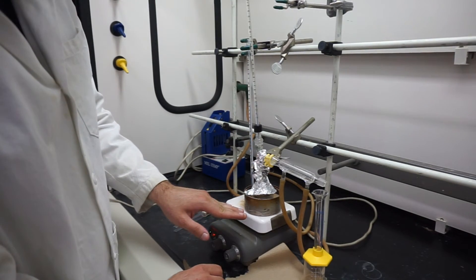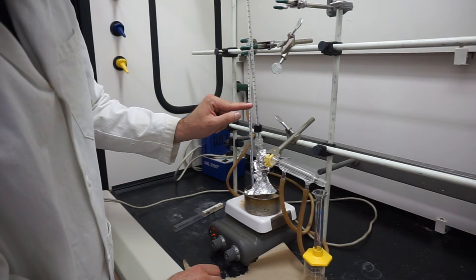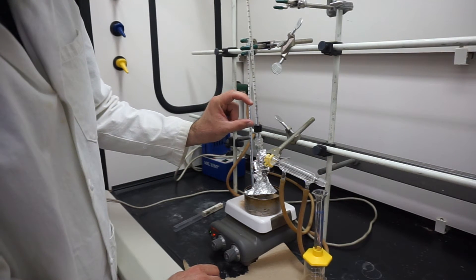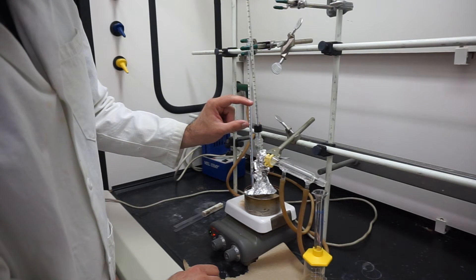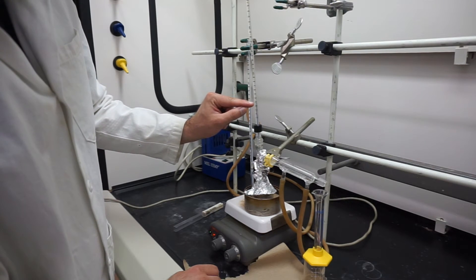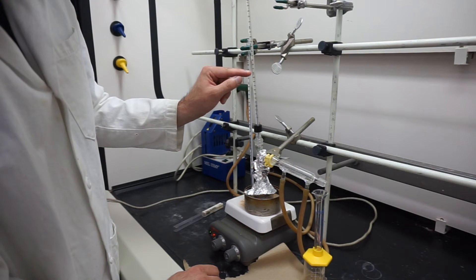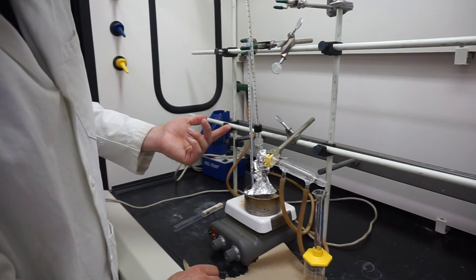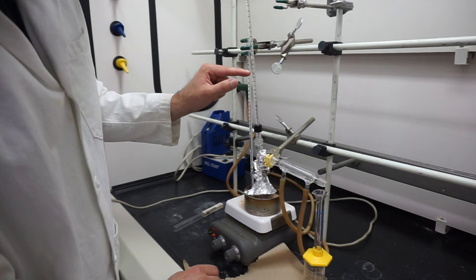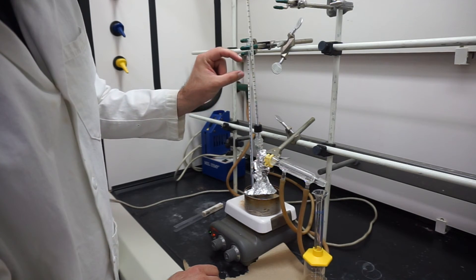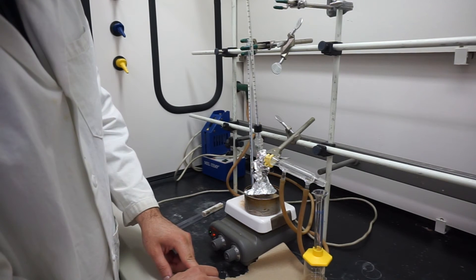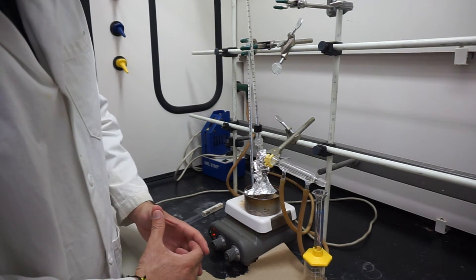As your distillation progresses, what's going to happen is the temperature in your thermometer up here is going to increase. As you actually distill out, it should reach closer and closer to the boiling point of your solvent. For water, we might see it get kind of close to 100, but it might actually take a while to heat up that long. That is the setup for your distillation.